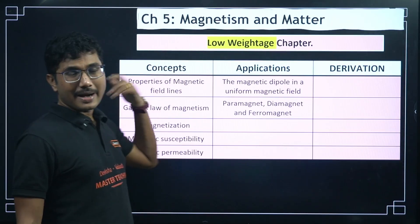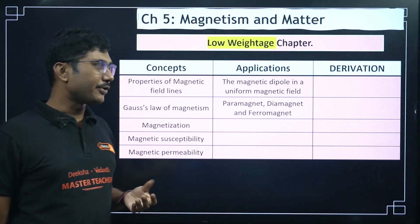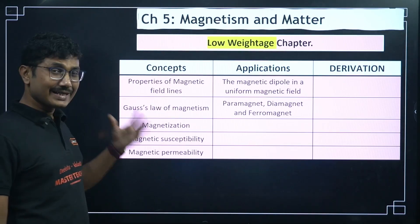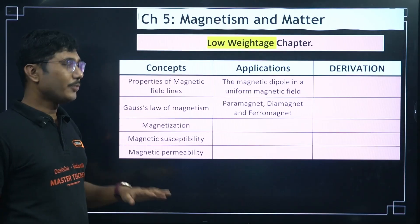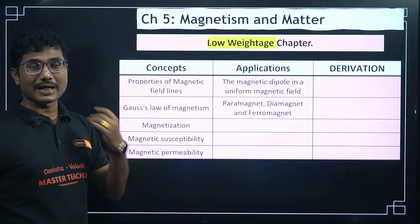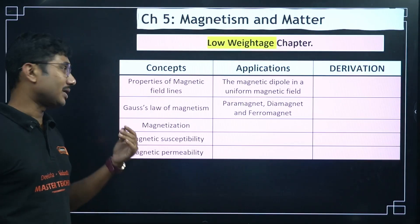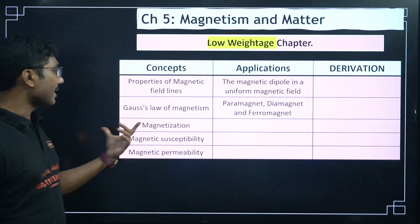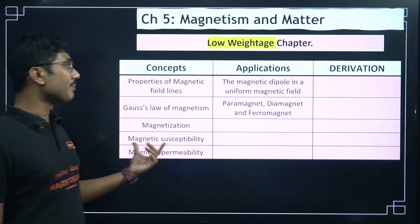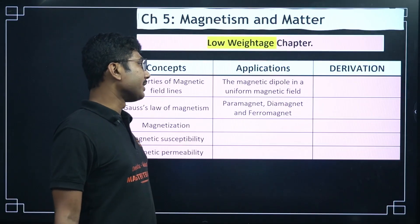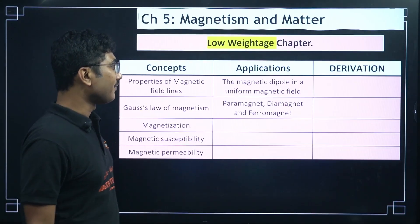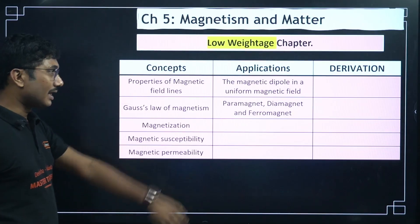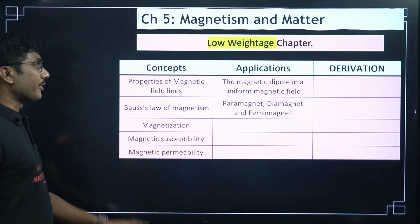Magnetism and Matter is a low to medium-weighted chapter, but it is an easy chapter so you can definitely score from it. Practice the questions that come from this chapter. Important topics include: properties of magnetic field lines, Gauss's law of magnetism, magnetization, magnetic susceptibility, magnetic permeability, the magnetic dipole in a uniform magnetic field, and the difference between permanent magnets, paramagnet, diamagnet, and ferromagnet.